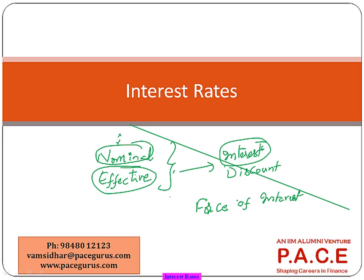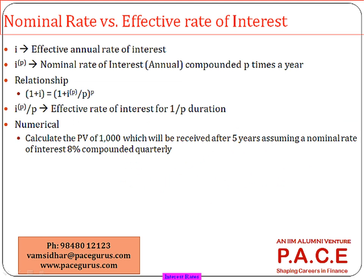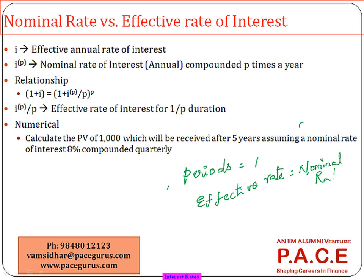Packaging all these things is what we are going to cover in this session. To identify the difference between an effective rate and a nominal rate: the first key point is that if the number of periods is equal to one, the effective rate is always equal to the nominal rate. I am saying number of periods equal to one, not number of years.